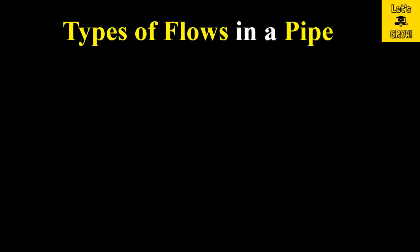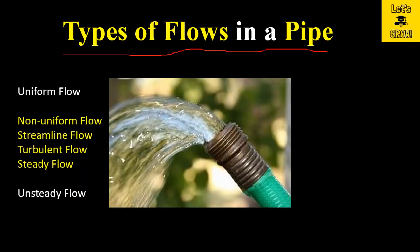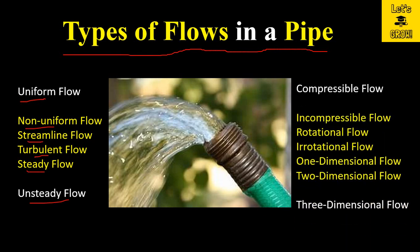Hello everyone, welcome back to our YouTube channel Let's Grow. Today's topic of discussion is types of flows in a pipe. In this video we will discuss uniform flow, non-uniform flow, streamline flow, turbulent flow, steady flow, unsteady flow, compressible flow, incompressible flow, rotational flow, irrotational flow, and one-dimensional, two-dimensional, and three-dimensional flow.